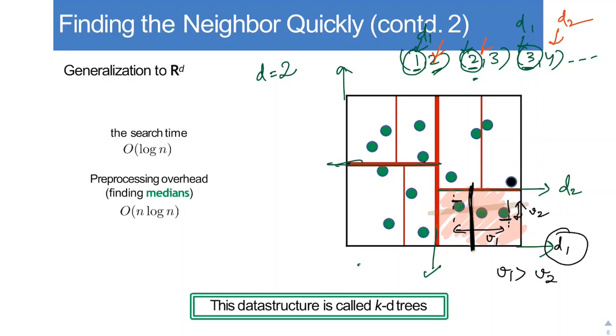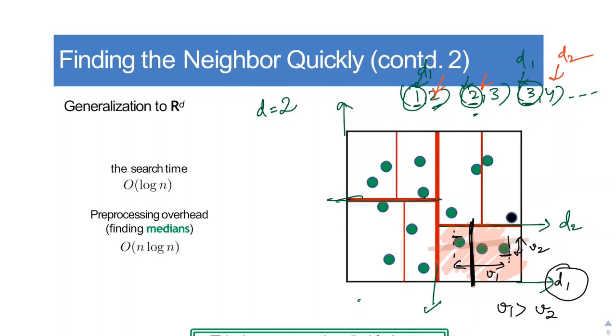So this data structure right here that we discussed is called the KD trees. So in KD trees, we are basically navigating to the region in which there is a high probability of finding the nearest neighbor and then finding the neighbor using distance computations.